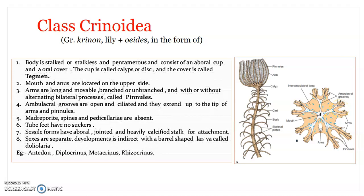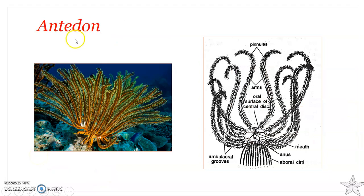The water vascular system is very simple and shows the basic echinoderm plan, functioning mainly in food collection. There is no madreporite to allow exchange of fluid with the surrounding environment. The nervous system is also very simple. Sexes are separate. Development is indirect, with a larval stage known as the doliolaria larva. An example already referred to is Antedon.